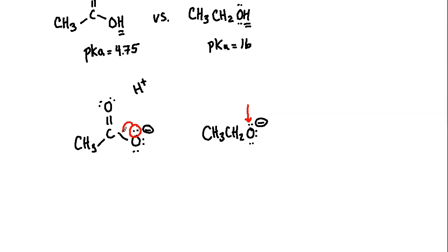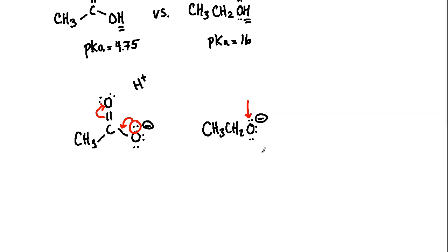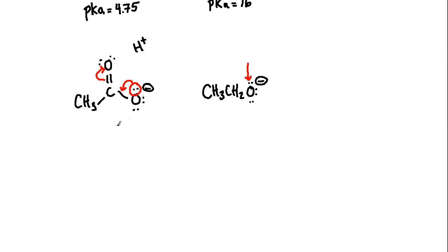That's exactly what can happen through resonance in the carboxylate. The oxygen can deposit electrons to create a pi bond and open up an alternative resonance form. Keep in mind that resonance is imaginary — the individual forms do not exist independently; it's really a blend between those forms. We're focused here on how resonance plays into acidity.